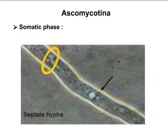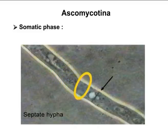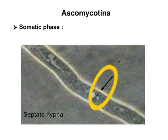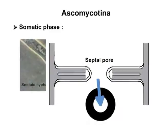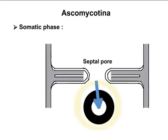You can see the diagram of a hyphae, which is septate in nature. The arrow indicates the presence of septa. If you see this septa in cross section, you will find the typical circular pore called septal pore present inside.